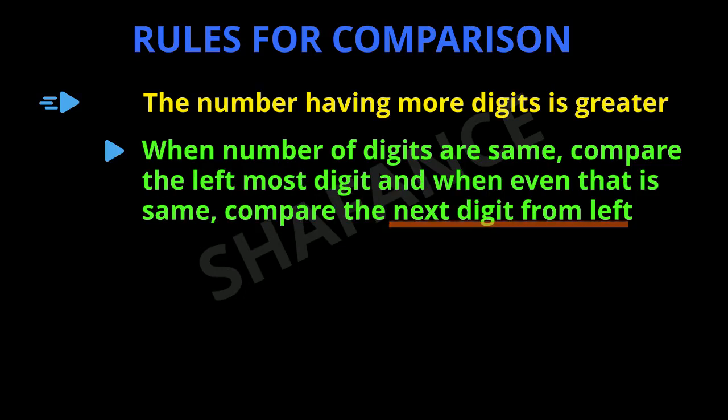Let us see this through an example. The first number is 82 and the second number is 91. Both these are two-digit numbers. The leftmost digit of 82 is 8, and in the case of 91, the leftmost digit is 9. Since 9 is greater than 8, 91 is greater than 82.